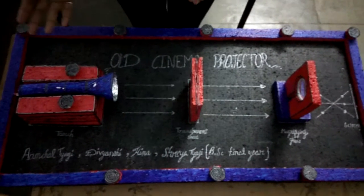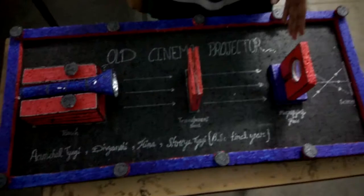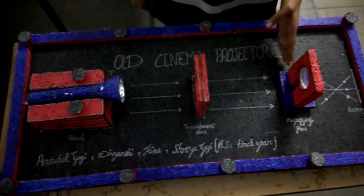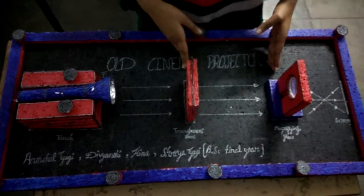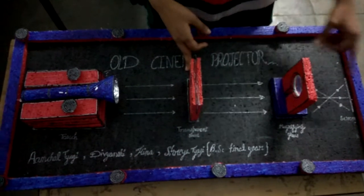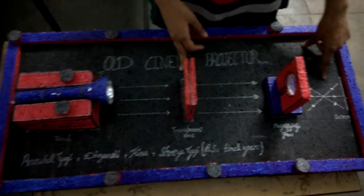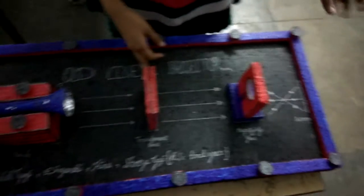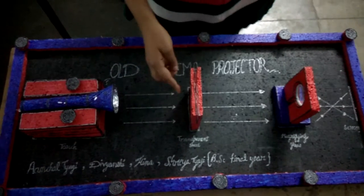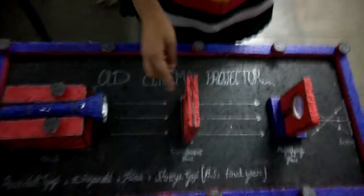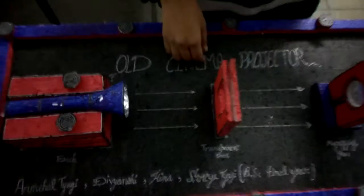It is based on the convex lens principle. The object and the magnifying glass should be shorter than the principal focus, then the image will appear sharp and clear. The image in the slide will be reversed, but because the magnifying glass has a property that it will show the image, our image will show straight.